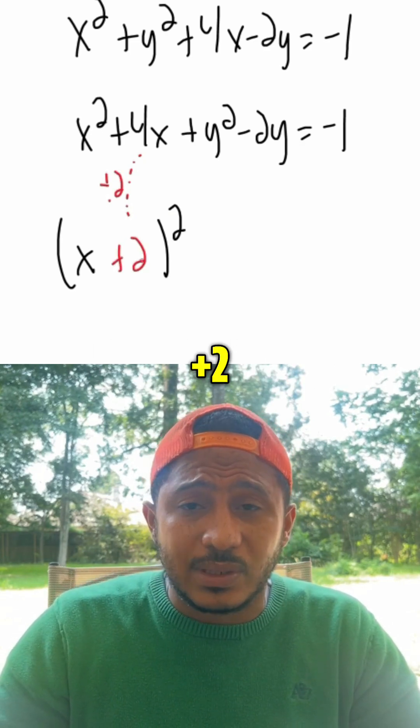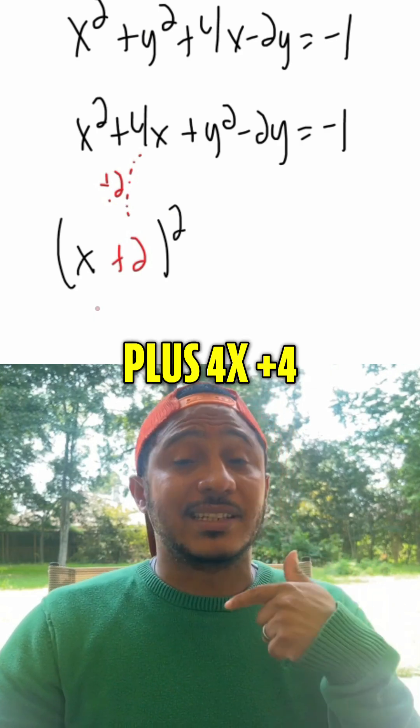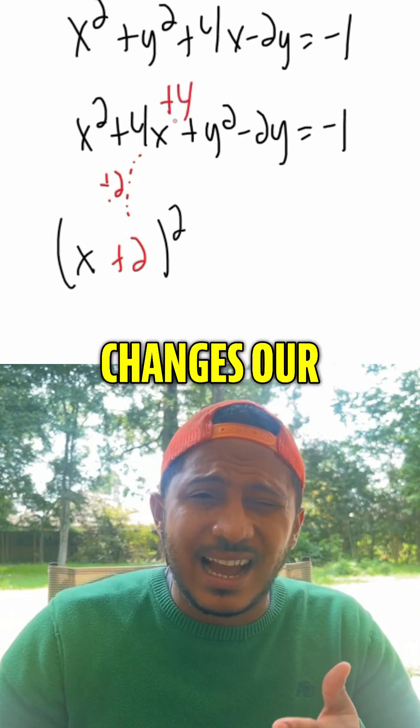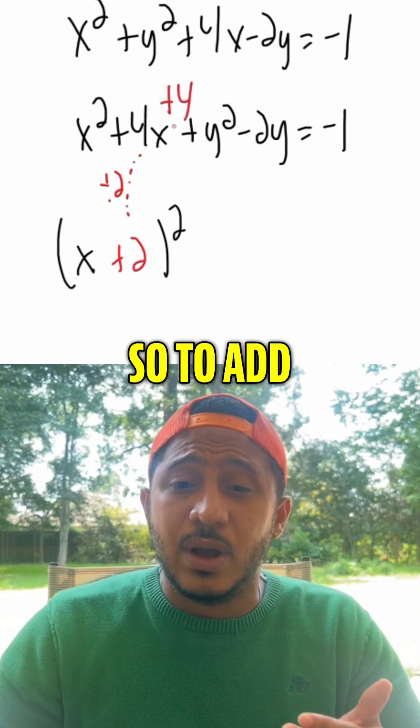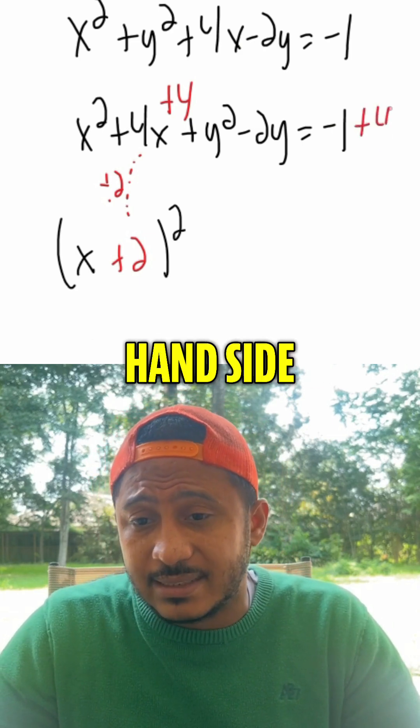So that gives us plus 2. But now to compensate for that, we know x plus 2 squared is x squared plus 4x plus 4. So we're going to have to add 4 to the top, but that changes our equation. So we add 4 to the left-hand side, then we have to also add 4 to the right-hand side.